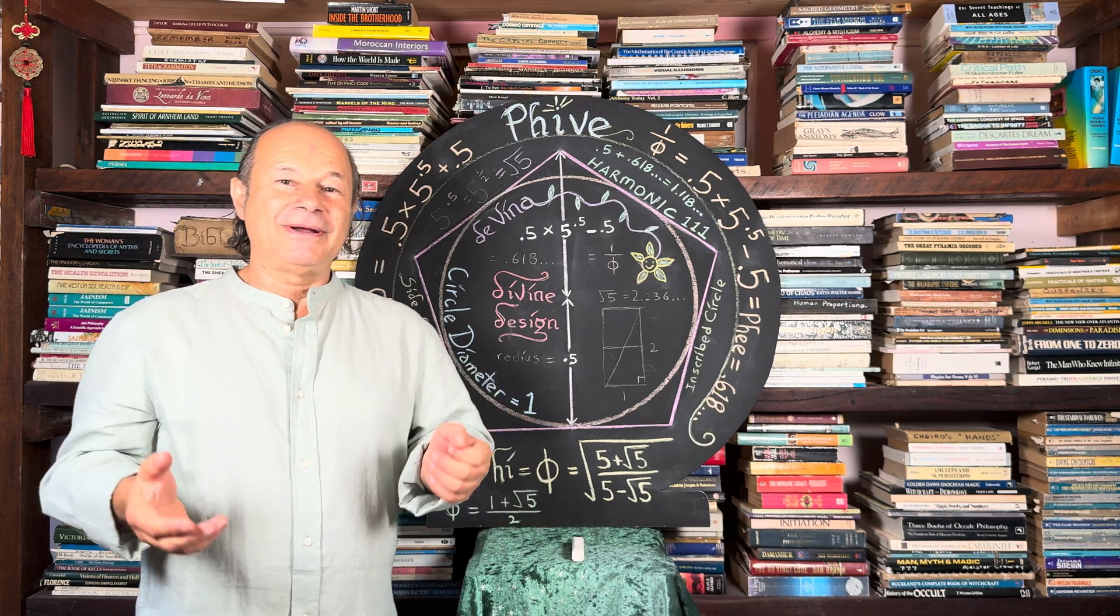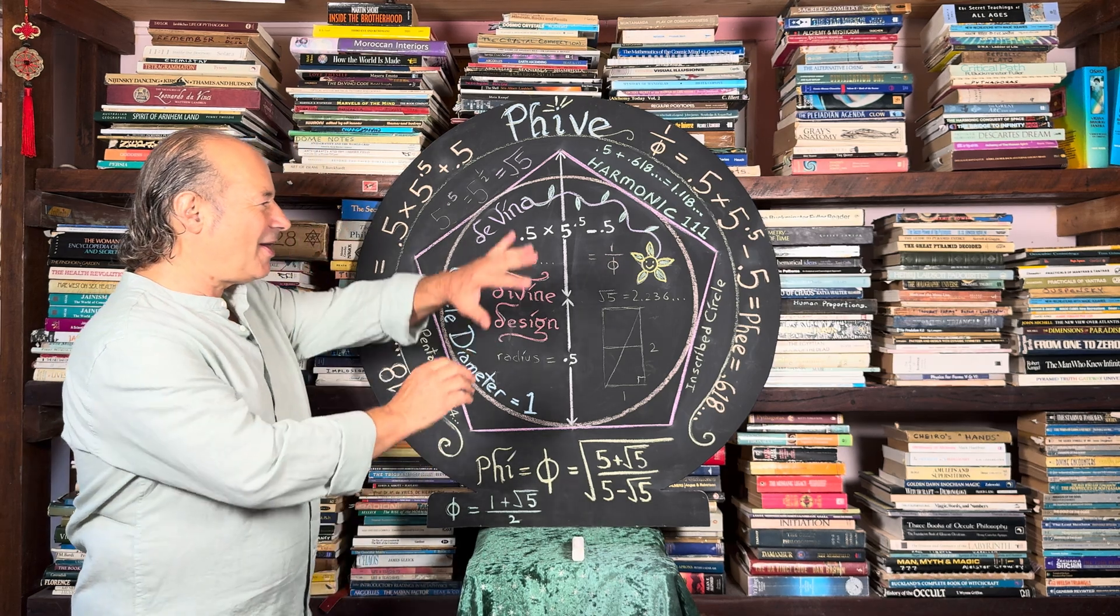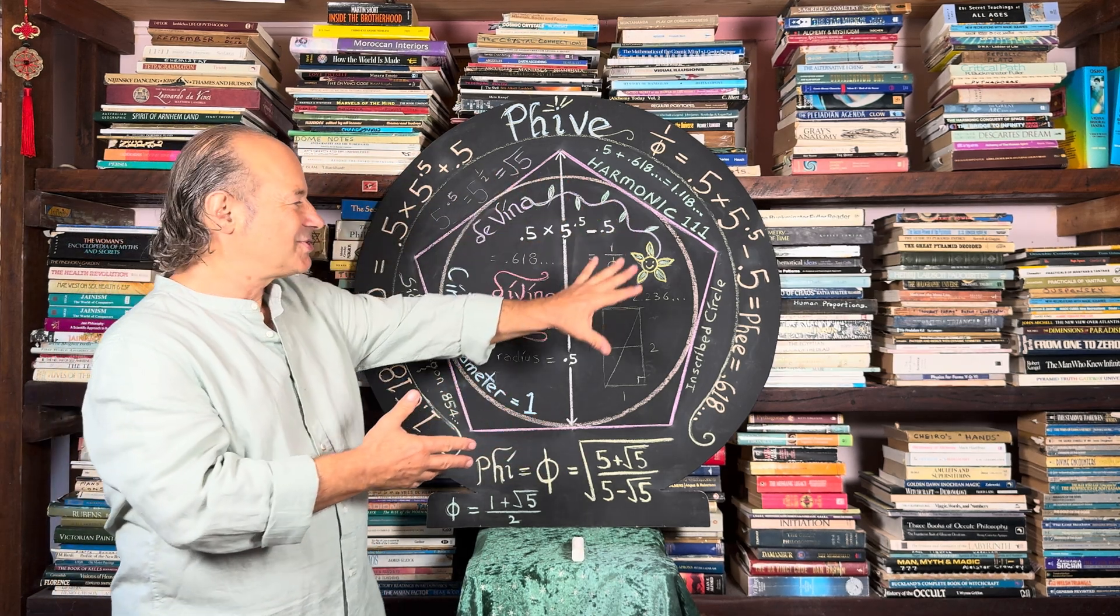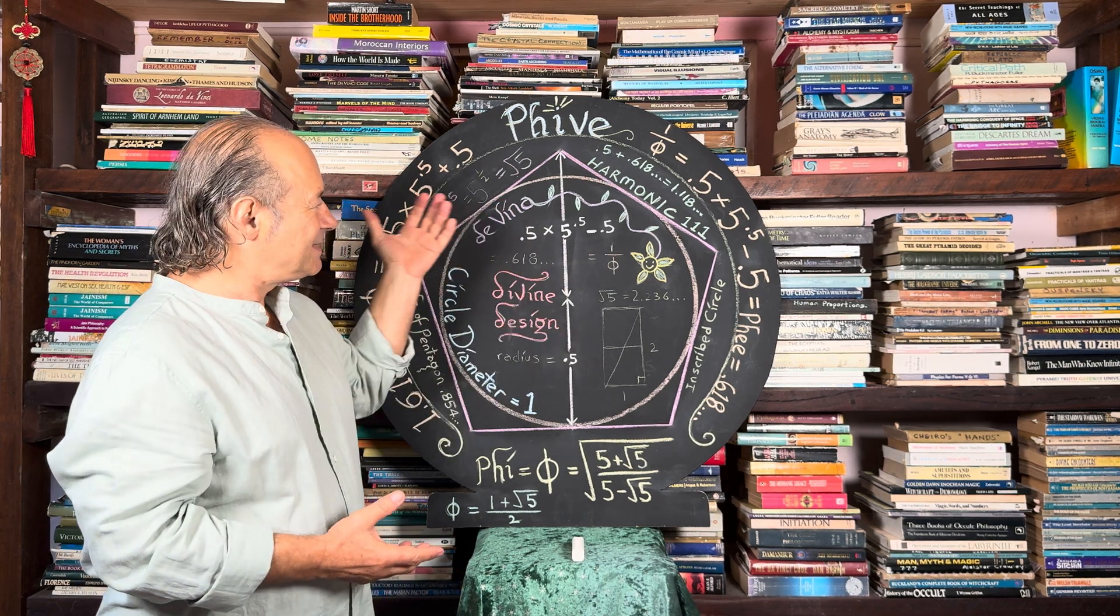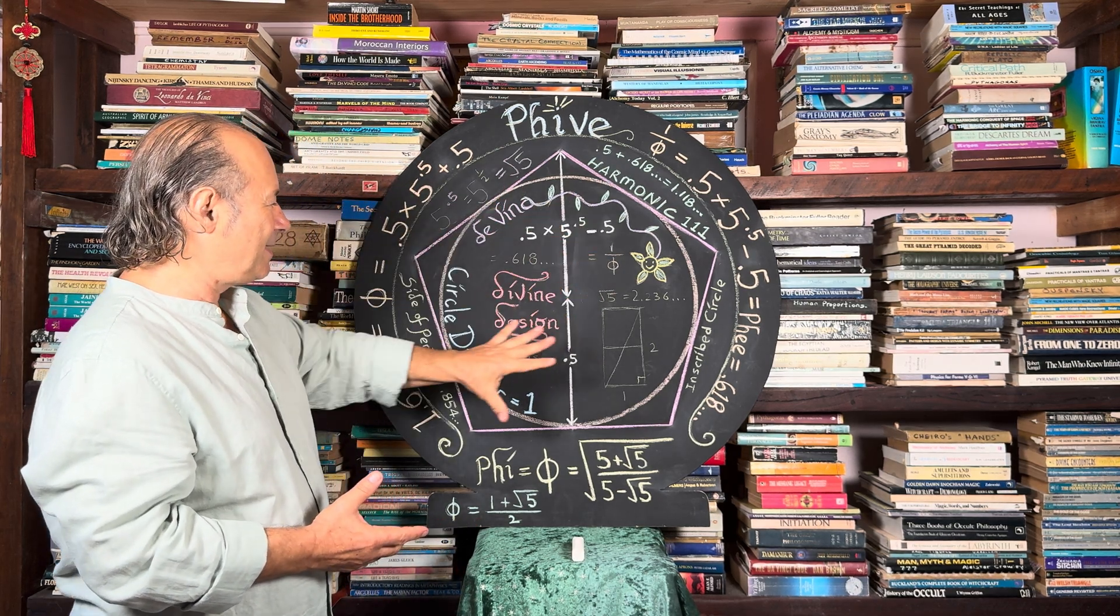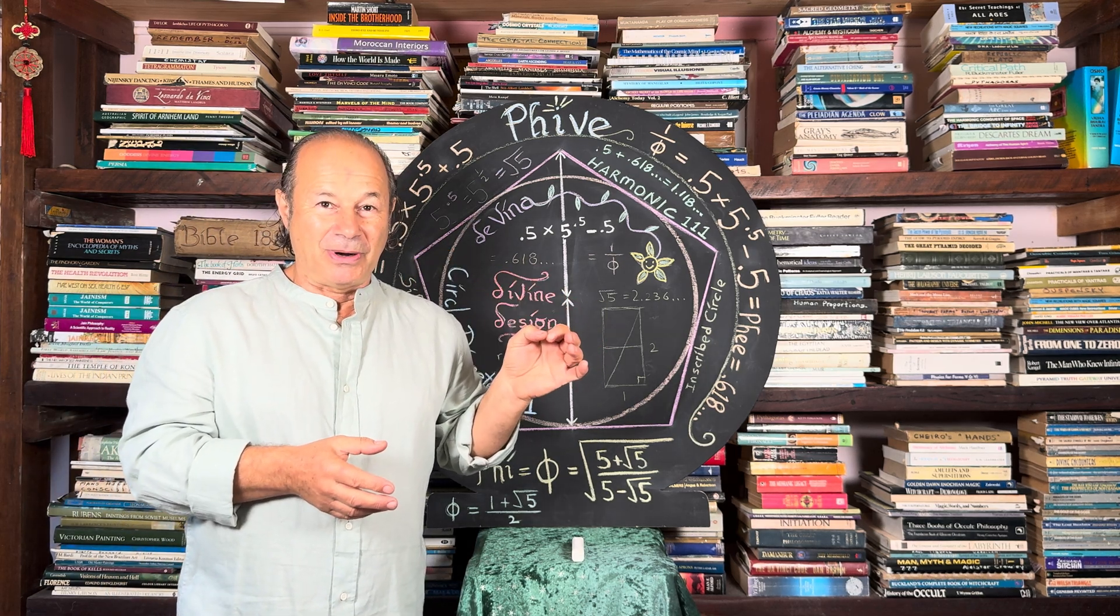Did you ever wonder about how the number 5 permeates the entire mathematical construction of the Pentagon? And the reason why the Pentagon is important is because what you're looking at is the geometric construction of every protein in your body.